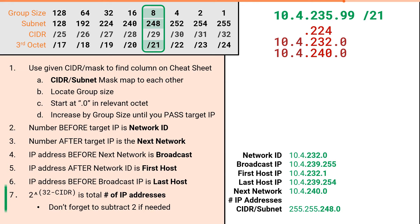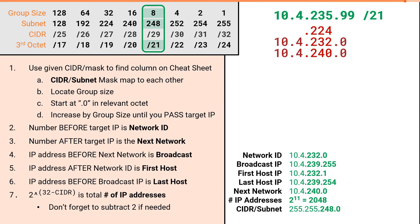To solve the total number of addresses, we would take 32 and subtract our CIDR notation of 21, giving us 11. Then take 2 raised to the power of 11 to get us 2,048. And that takes care of our second example problem.